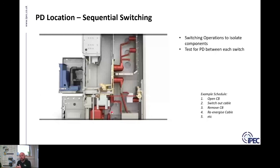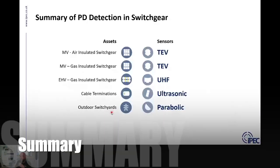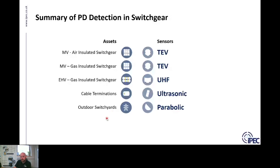Coming back to how we detect PD inside switchgear — there are a variety of defects and faults that could be found in switchgear. These sensors operate at different frequencies and bandwidths, optimized for PD detection in different types of equipment. By using a combination of these sensors with appropriate equipment, you can identify where problems may be occurring on your network.